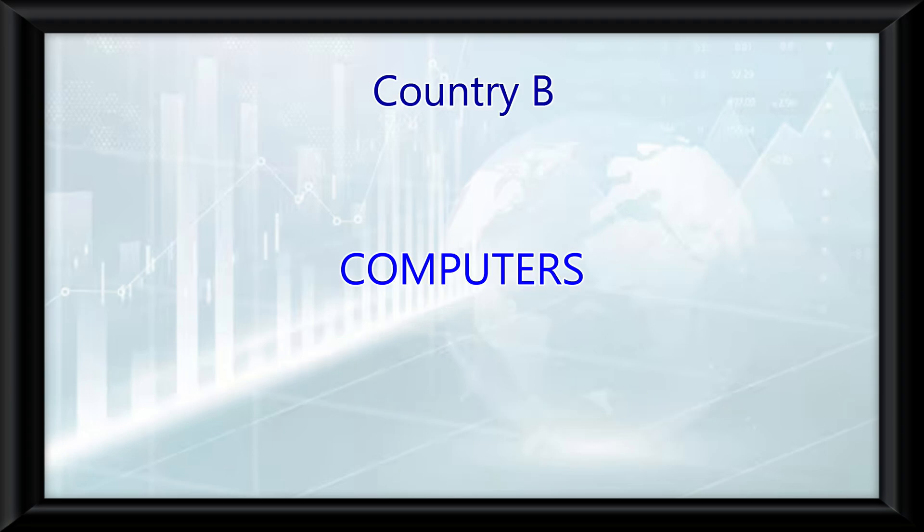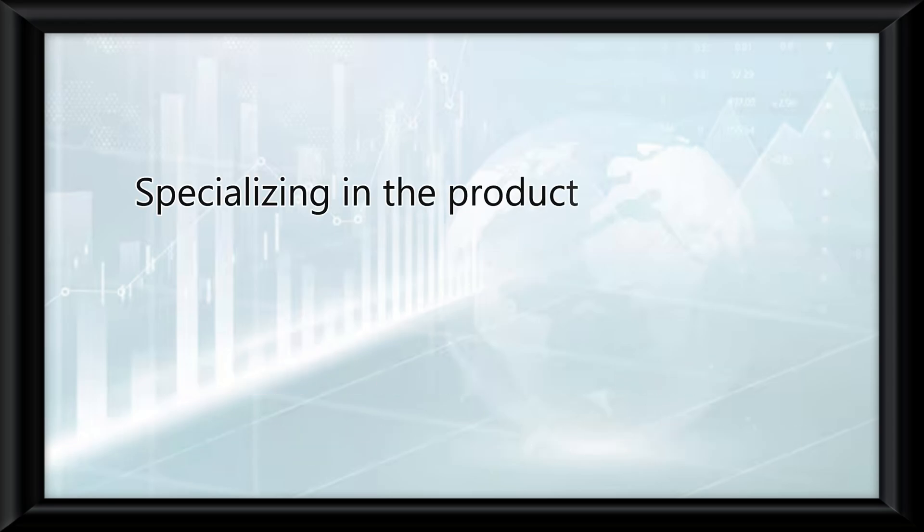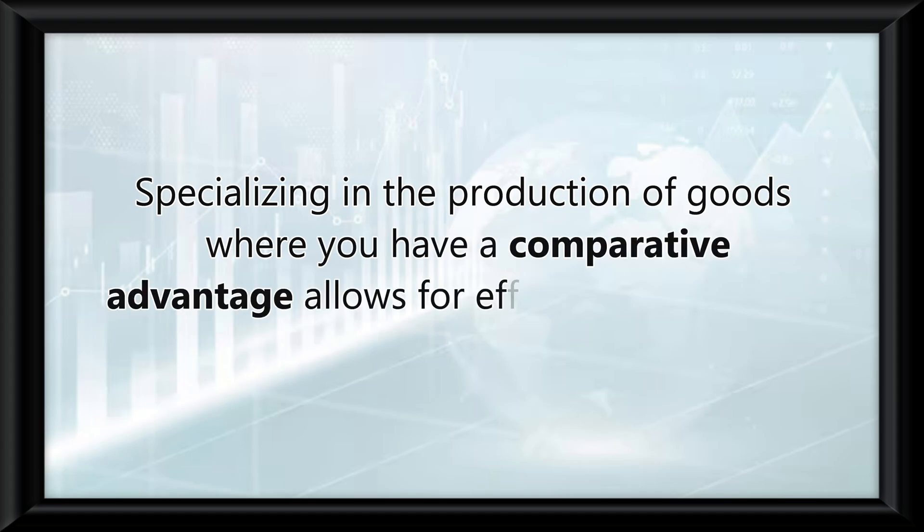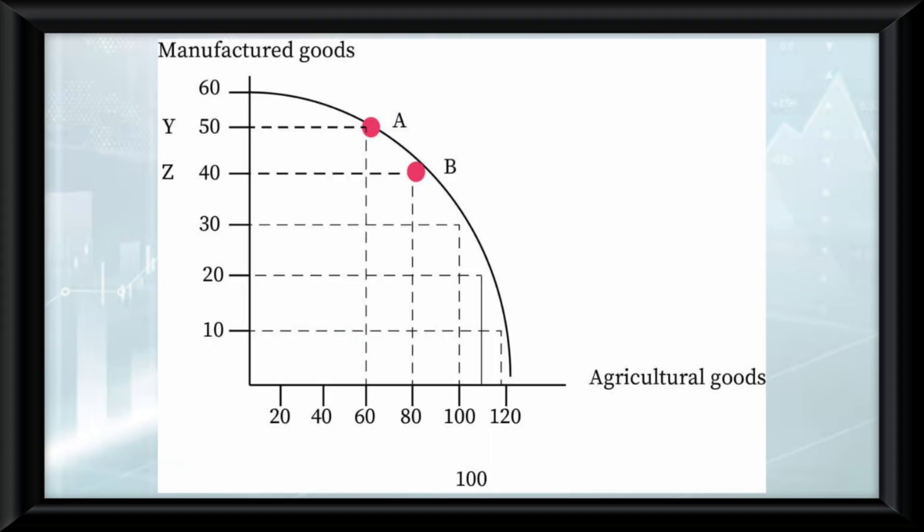Meanwhile, country B should specialize in computers even if it is less efficient because its opportunity cost for producing computers is lower. Specializing in the production of goods where you have a comparative advantage allows for efficient resource use and opens up the possibility for trade. This enables countries or individuals to consume beyond their production possibility curve or PPC.